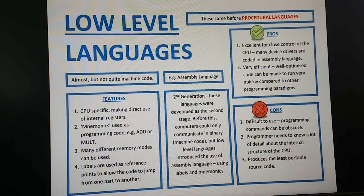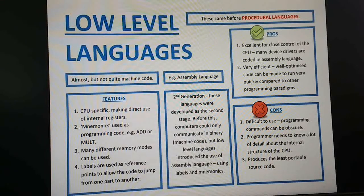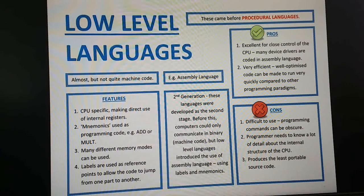Assembly language is CPU-specific, making direct use of internal registers. Mnemonics code is used as programming code — examples include R, multiply, and similar symbolic instructions. Many different memory modes can be used, and mnemonics code uses both alphabets and numbers. Labels are used as reference points to allow code to jump from one part to another. Assembly language represents the second generation of languages; before this, computers could only communicate in binary machine code.